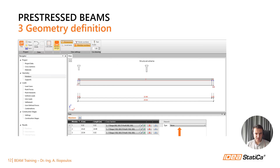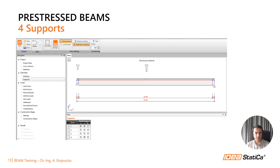To define the system, we navigate to the corresponding field for the members, click on it, and start the input. We can define multiple members including their length and corresponding cross-sections. We can also define a haunch, but in our case there is no haunch between the two different cross-sections used. Defining the supports is a simple step — it is quick and straightforward, and flexible supports are also possible.